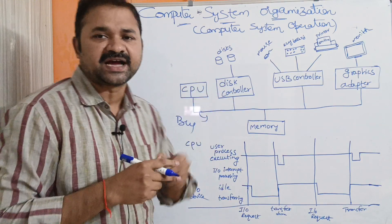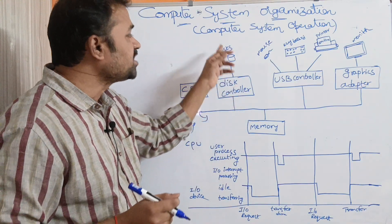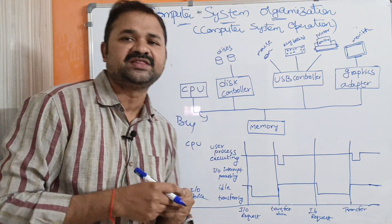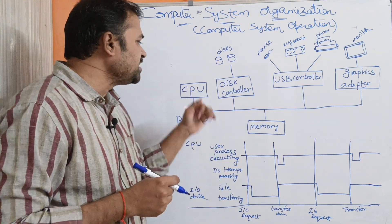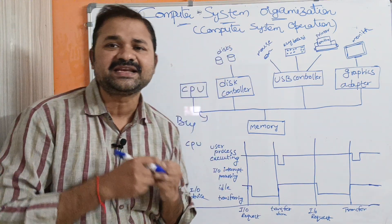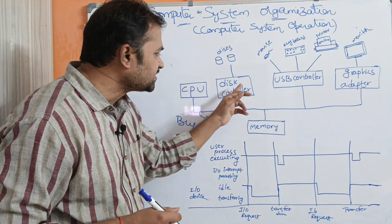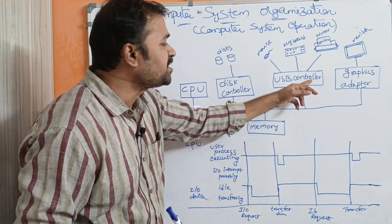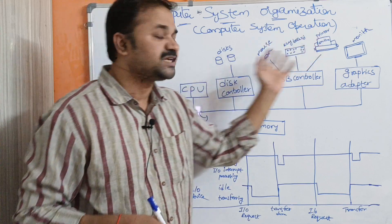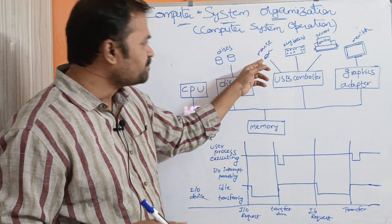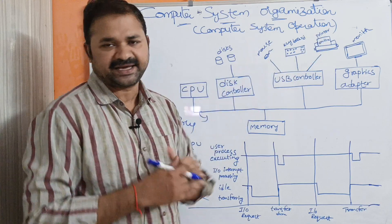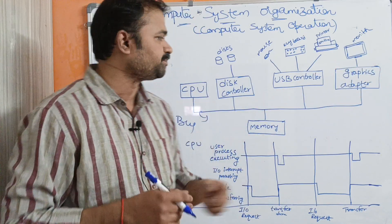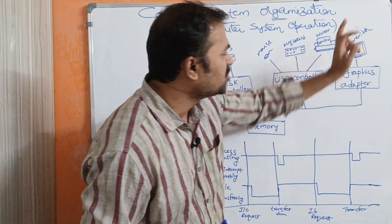The disk controller is in charge of the disk. CPU cannot interact directly with the disk; CPU can interact with the disk controller through the bus. The USB controller is in charge of various input/output devices such as mouse, keyboard, and printer. The graphics adapter is in charge of the monitor.